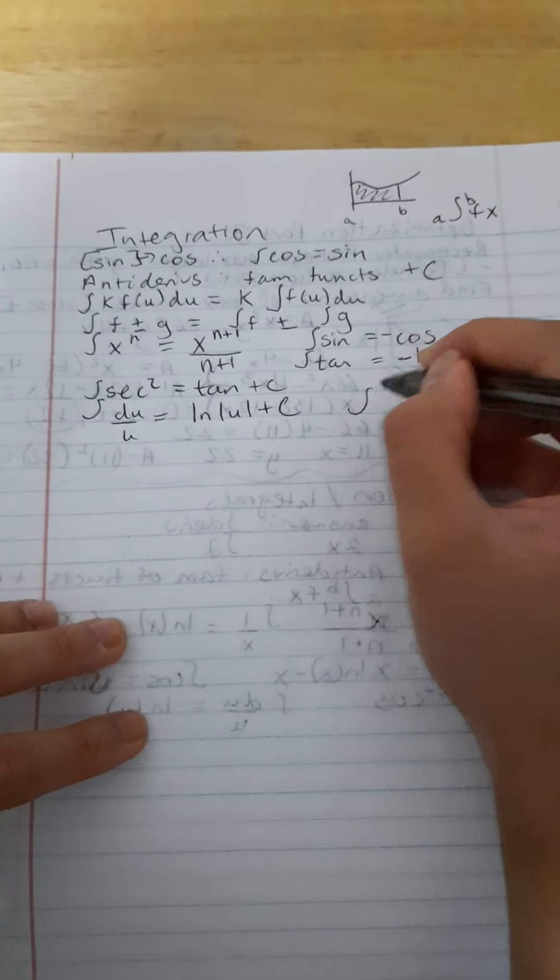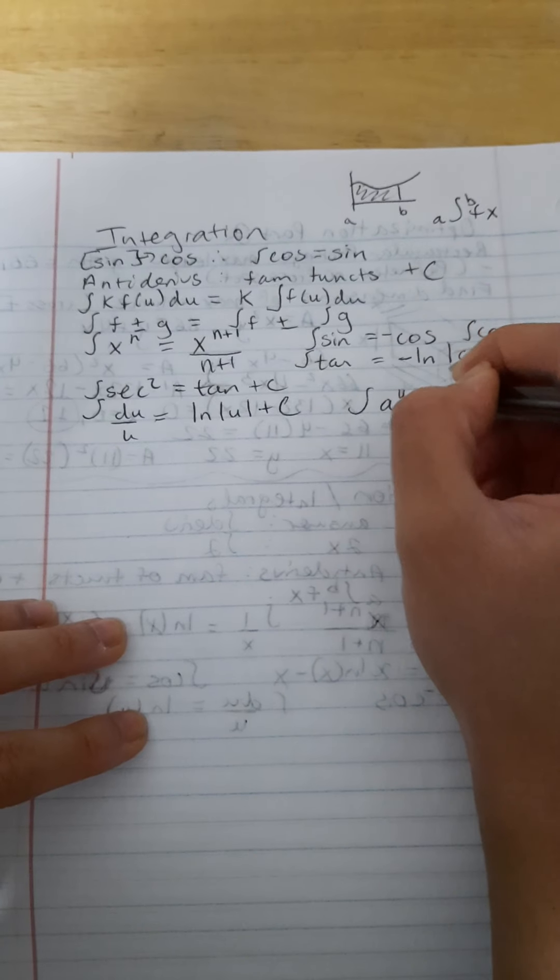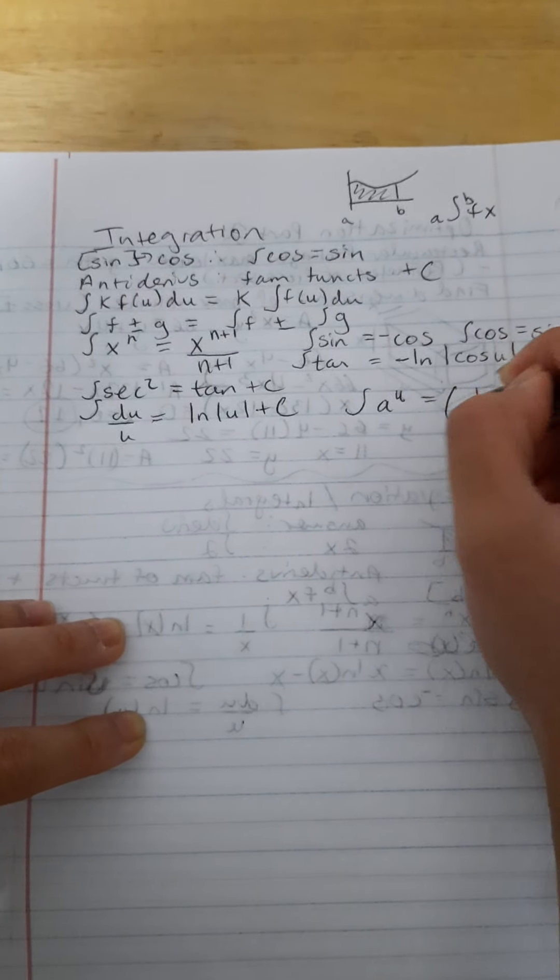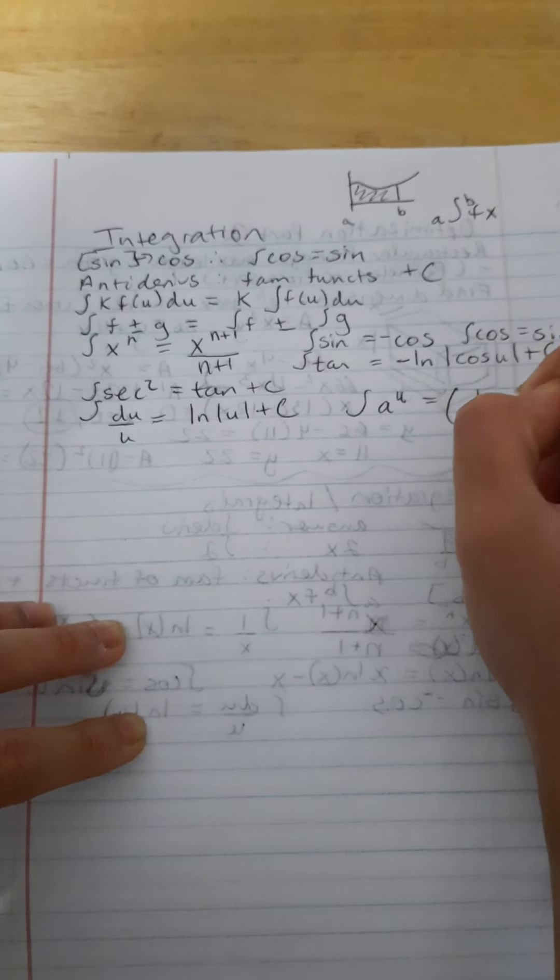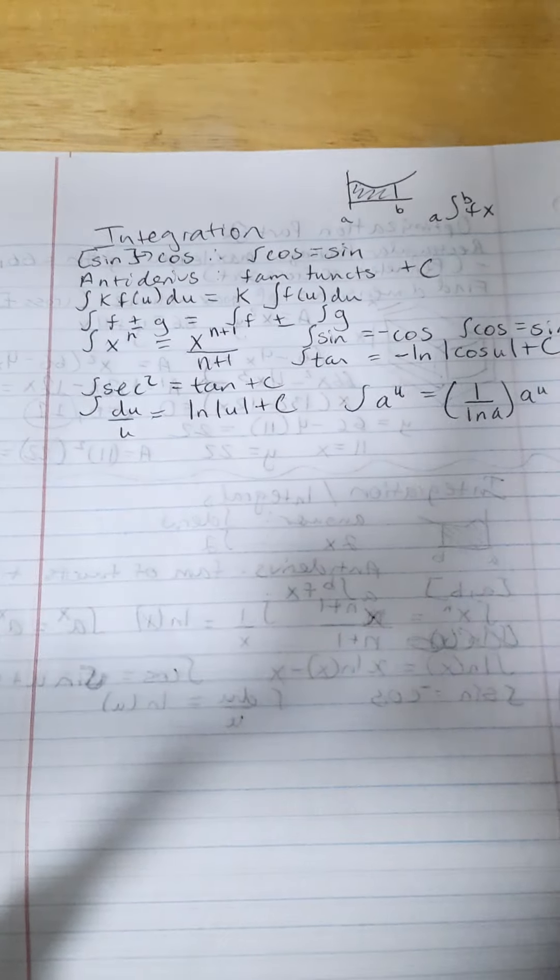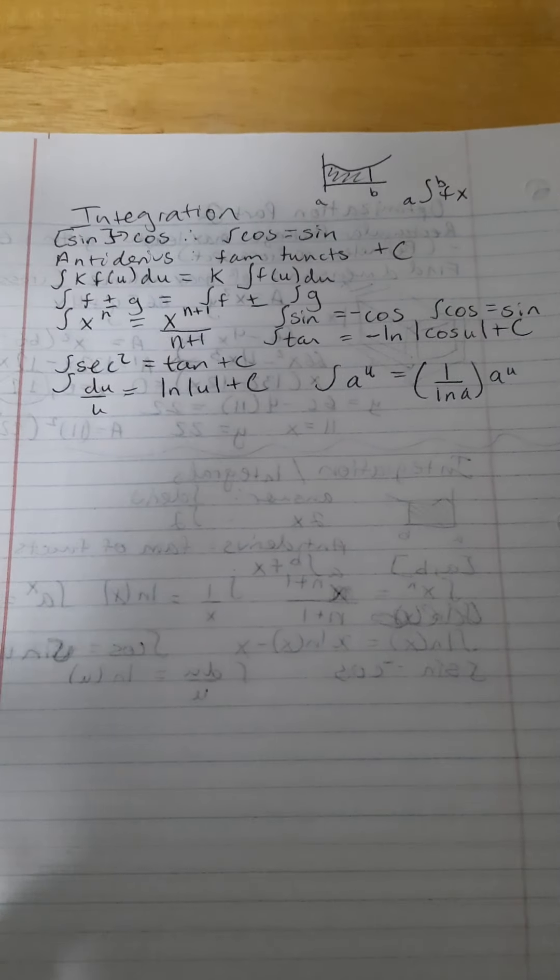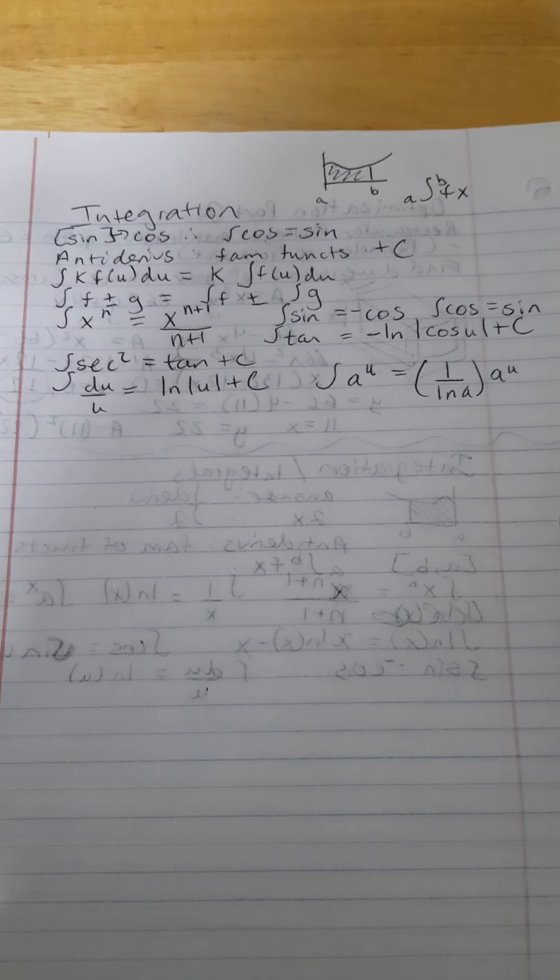Also, there are going to be things like a to the u, which is going to be equal to, in parentheses, 1 over ln of a times a to the u.